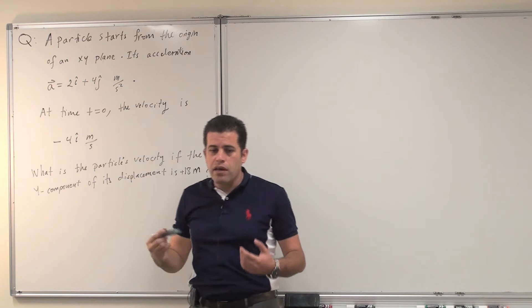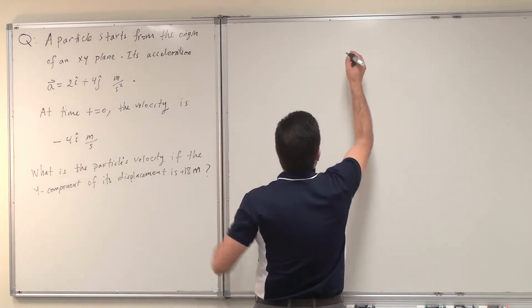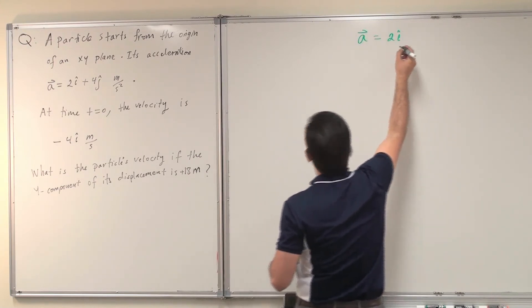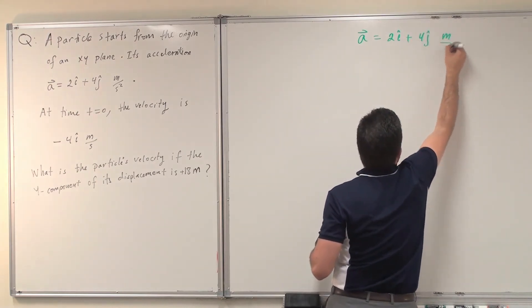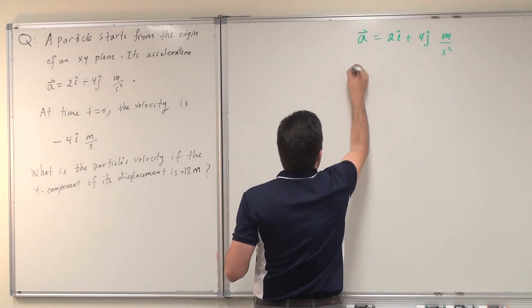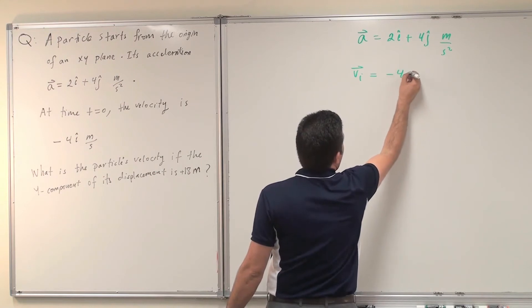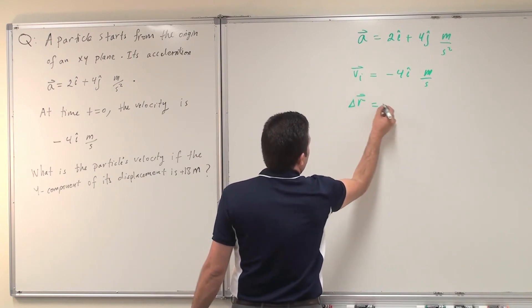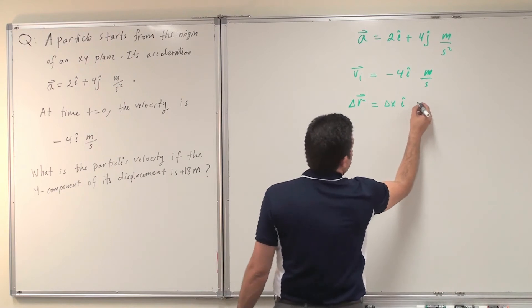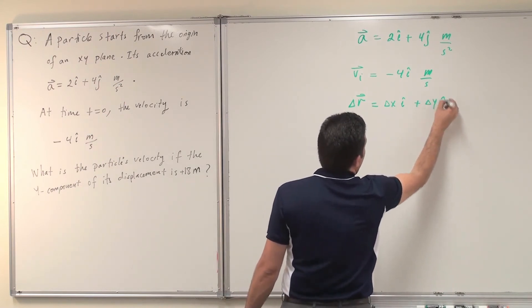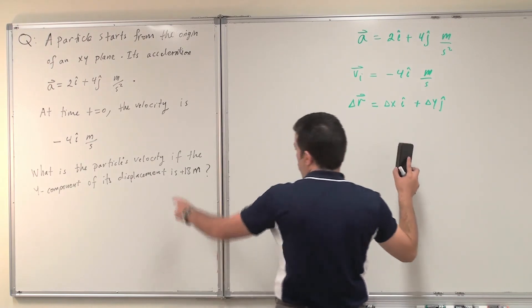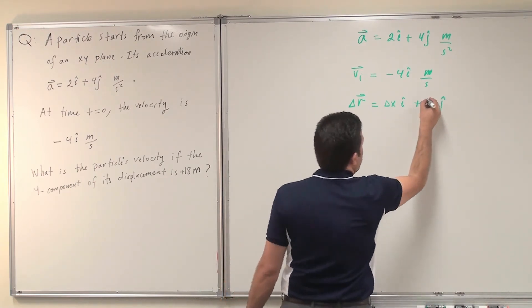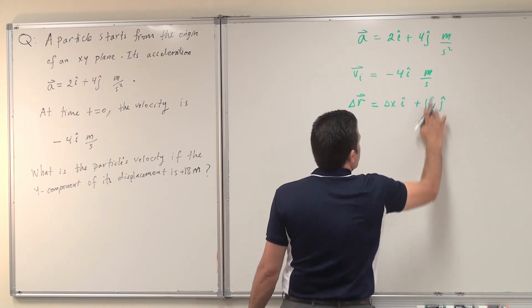To solve this question, I need to know if it's a constant acceleration. I can tell from the acceleration given that it is constant — it does not depend on time. So I can apply equations of motion. The acceleration is 2i-hat plus 4j-hat m/s², the initial velocity is minus 4i-hat m/s, and the y-component of displacement delta-y equals 18 meters.